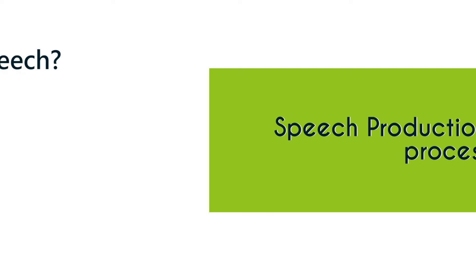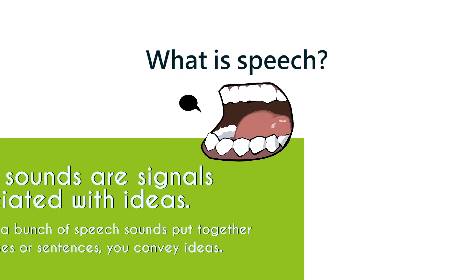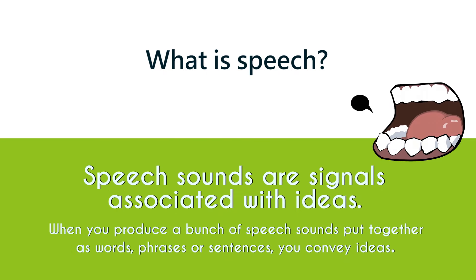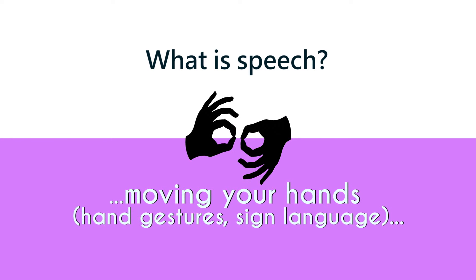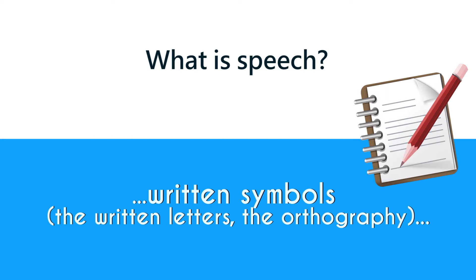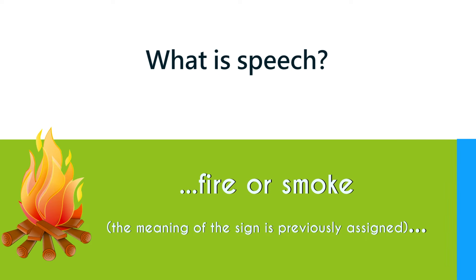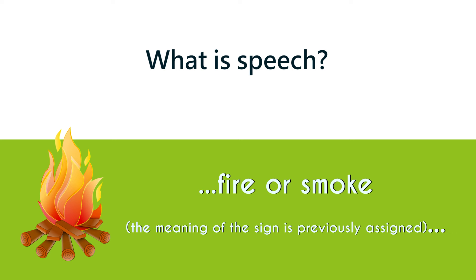Speech is basically a bunch of sound signals that are associated with ideas. Instead of using sound signals we could use other signals — hands, a prepared sign, fire, or smoke. But in order to know what the meaning of a symbol or signal is, you need to already know what that signal is associated with. We need to agree and make a convention that this signal refers to this idea.